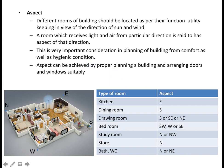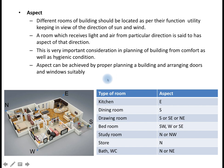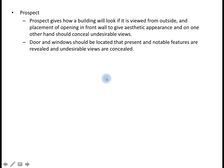Aspects can be achieved by proper planning of a building and arranging doors and windows suitably. This is a general arrangement of the building where we can see the location of different components. Some things may not be as per the suggestions due to limitations, so as mentioned earlier, some things will have to be compromised while doing the general planning of a building. That is aspect.